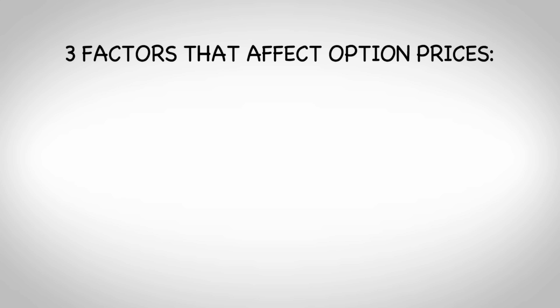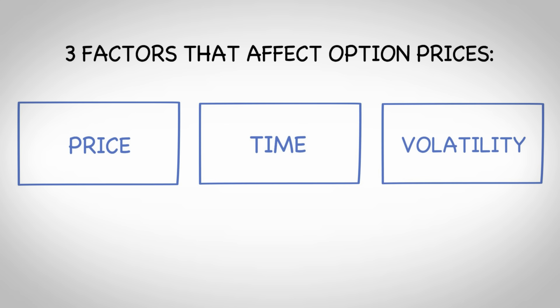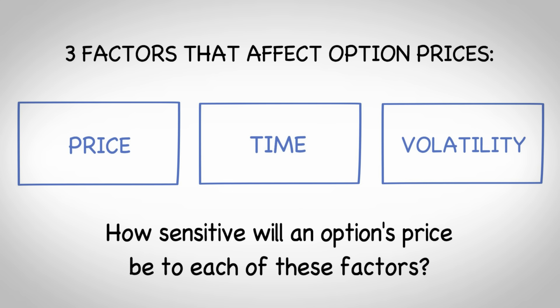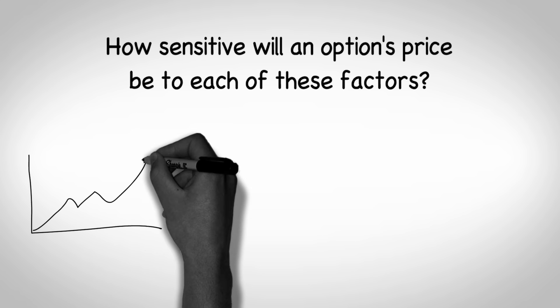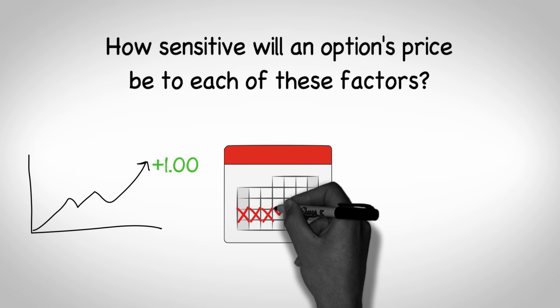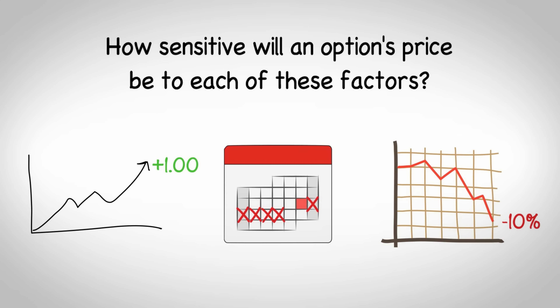You learned that option prices are affected by three factors on a daily basis: underlying stock price, time to expiration, and the implied volatility of the underlying stock. But here's the question — how sensitive will an option's price be to each of these factors? If the stock goes up by one point, how much will you make on that call option? If five days pass, how much money will you lose to time decay? If volatility drops by 10%, how much will the option's price change?